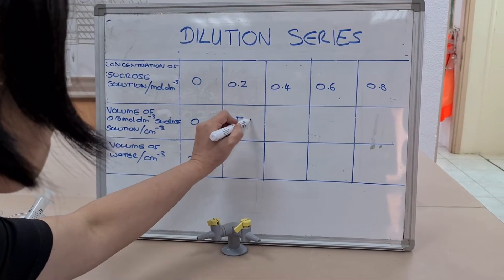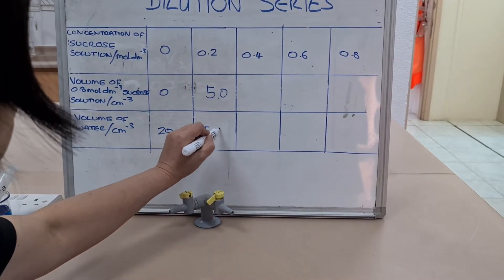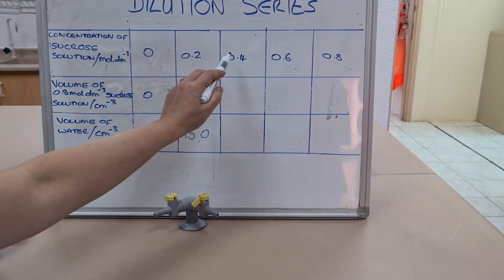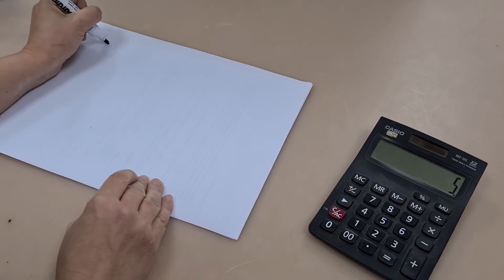So from our stock solution, we're going to add 5 cubic centimeters and we're going to add 15 cubic centimeters of water to add up to our 20. Moving on to a 0.4 molar solution, we use the same equation.